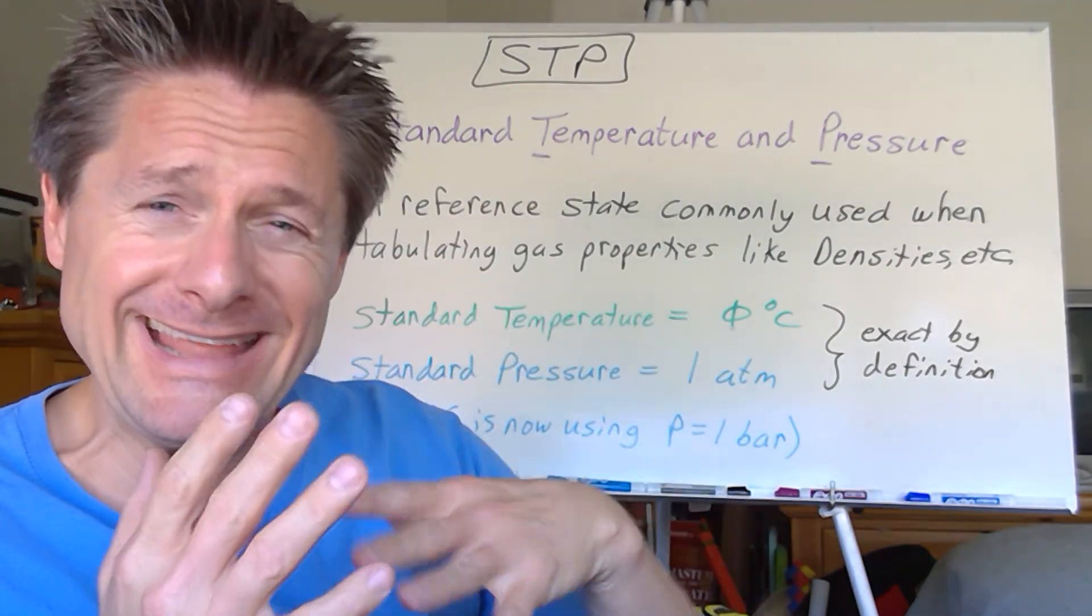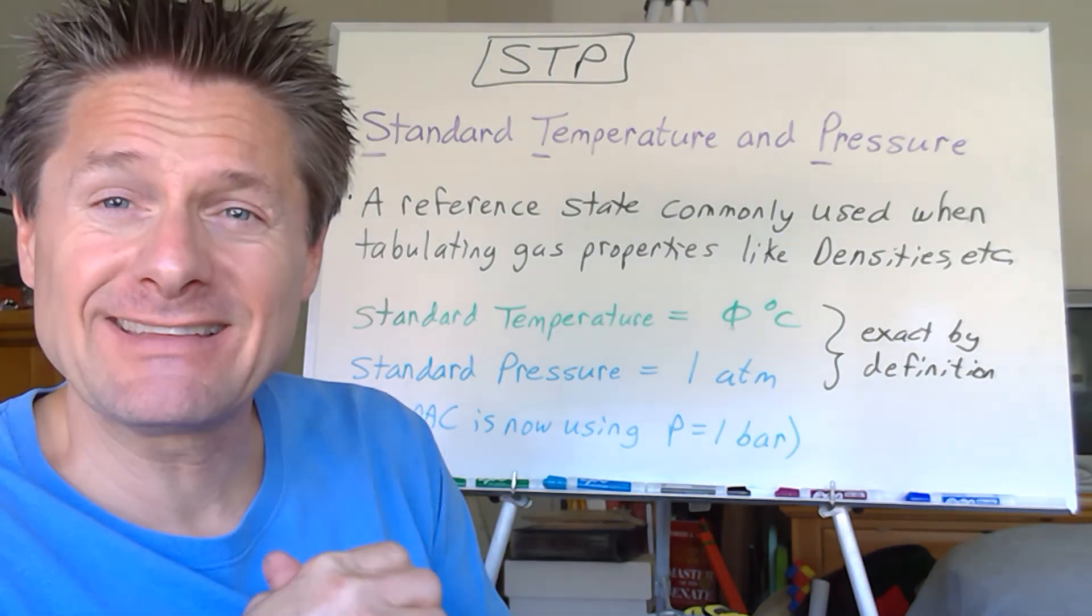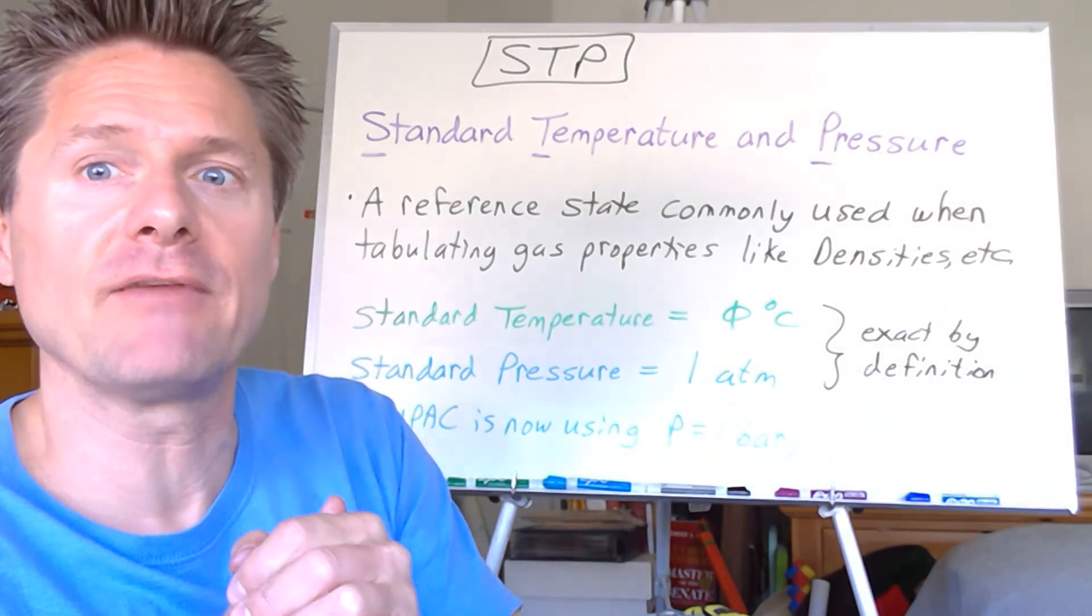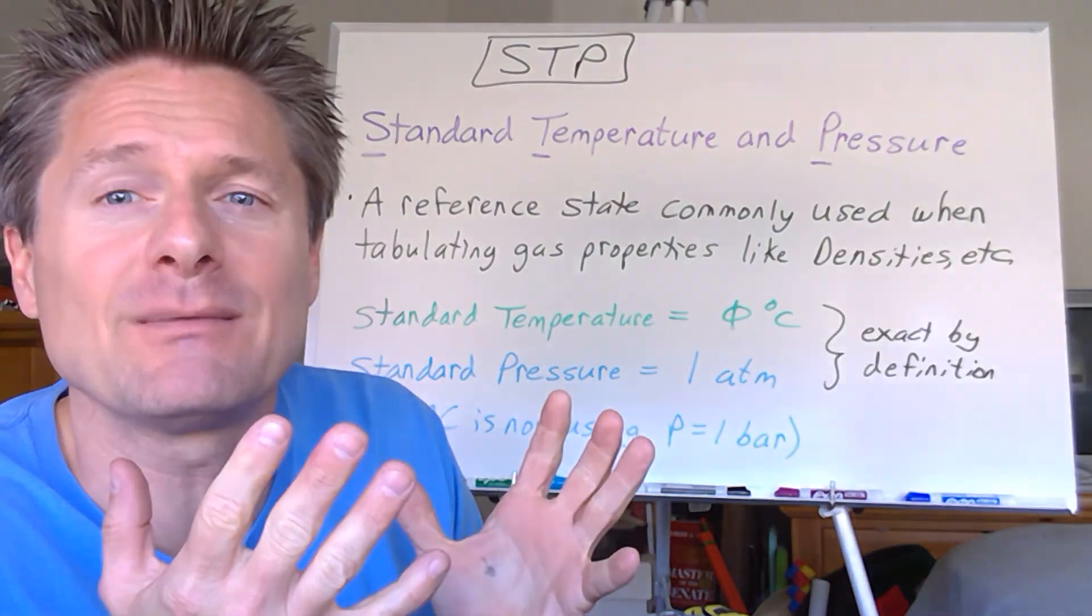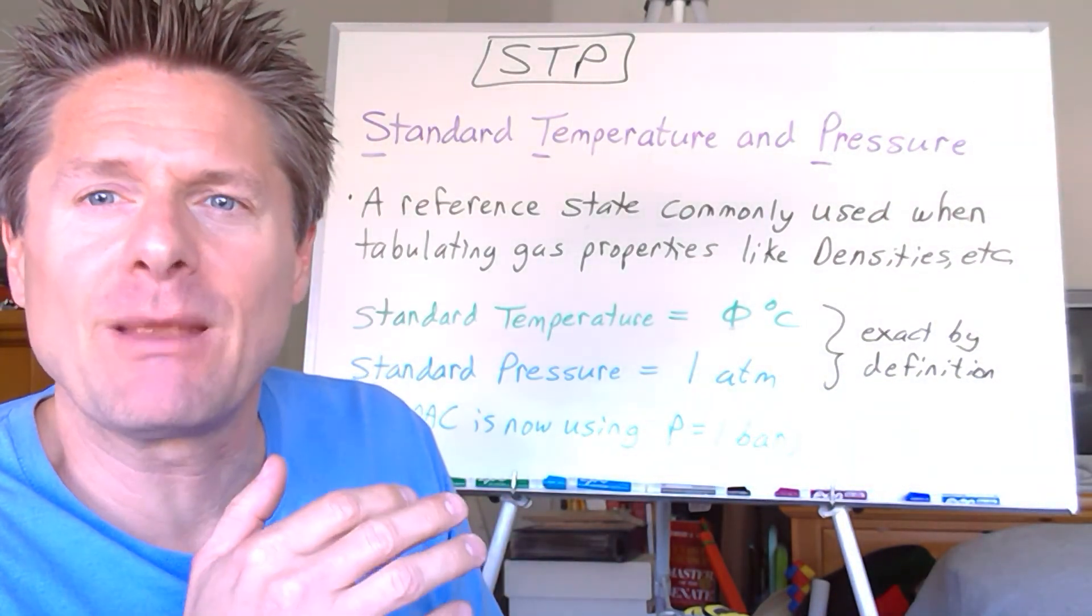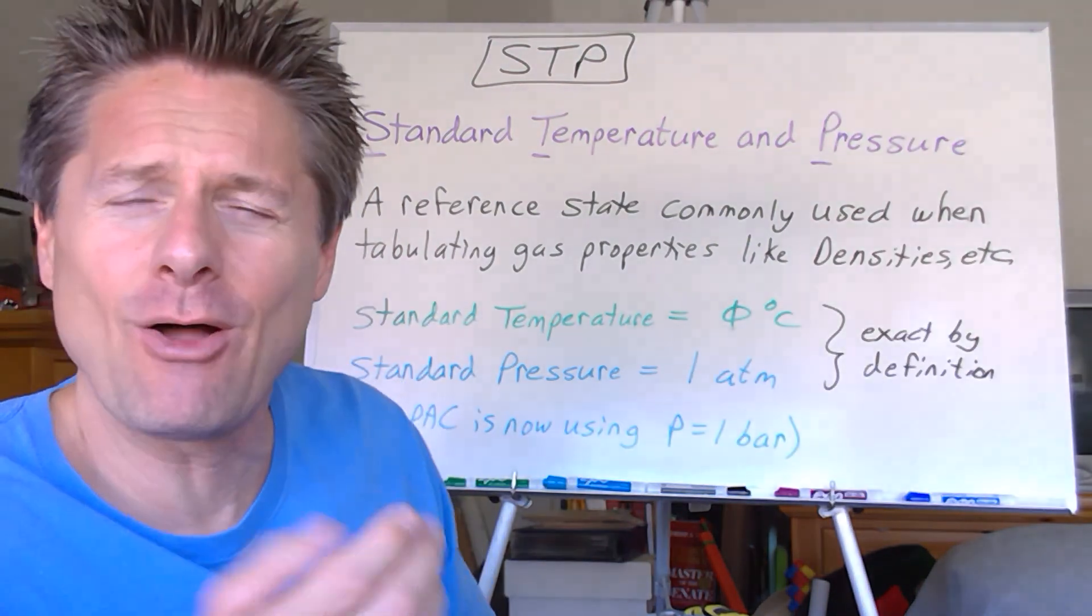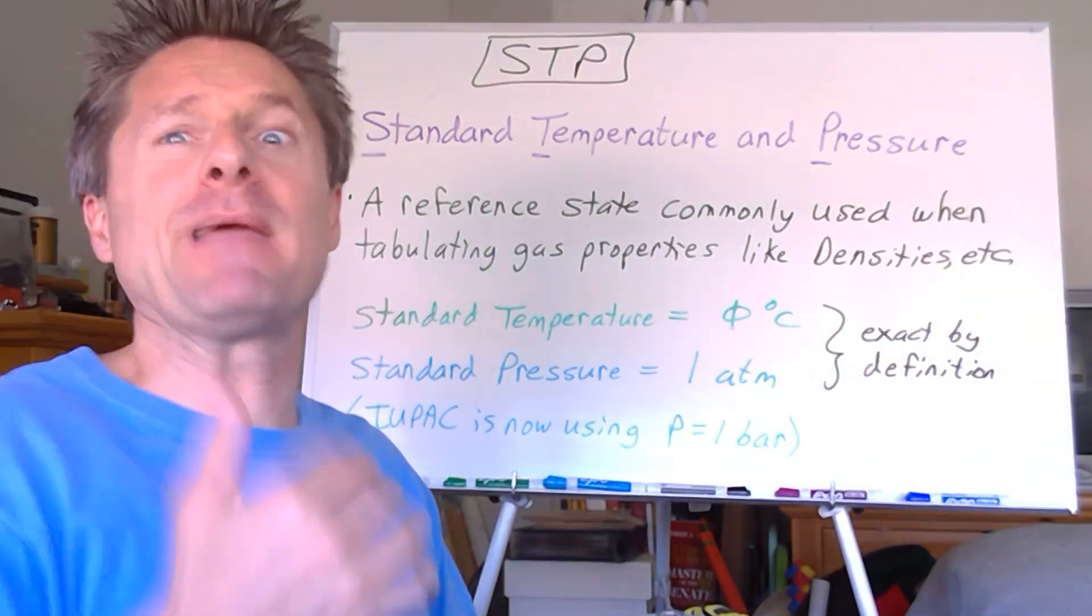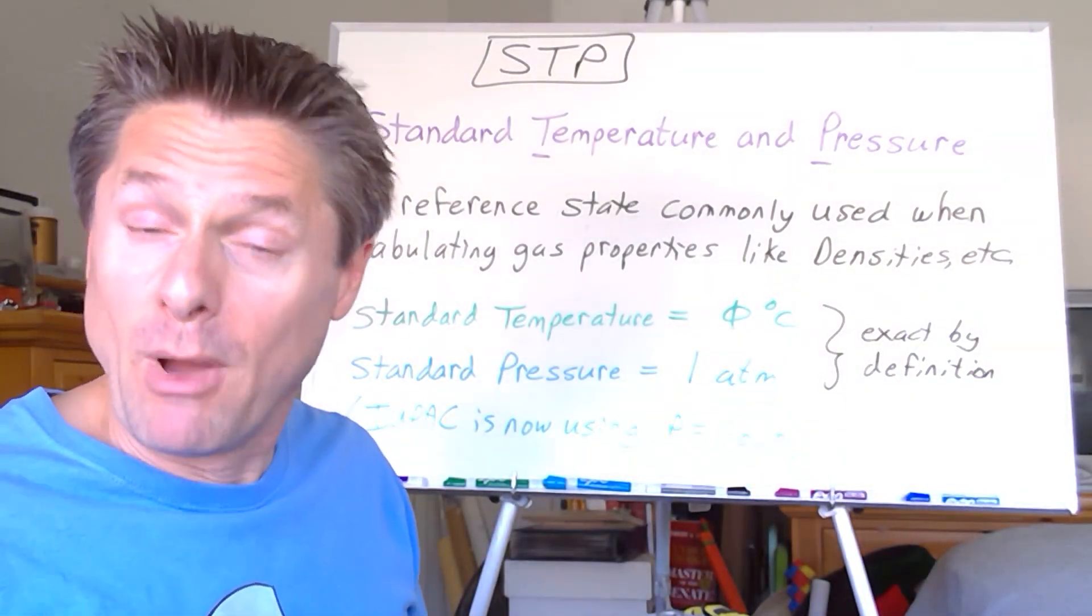We very commonly like to use a reference state. You'll see this in not just this, but a whole bunch of different things. Kind of a reference point to compare everything else to, like the atomic masses are all relative to the carbon-12 isotope. But remember, density of gases is dependent on temperature. So trying to list the densities of all gases, it's different at every temperature.